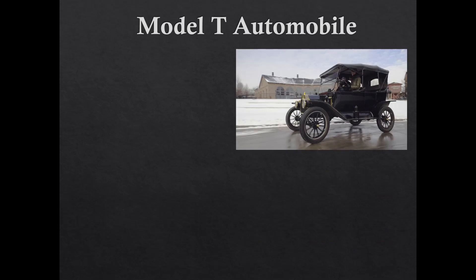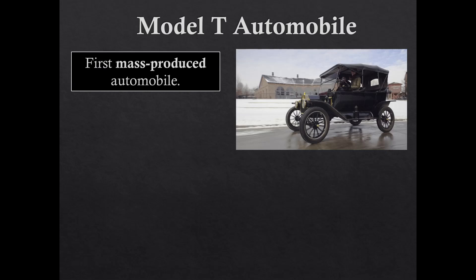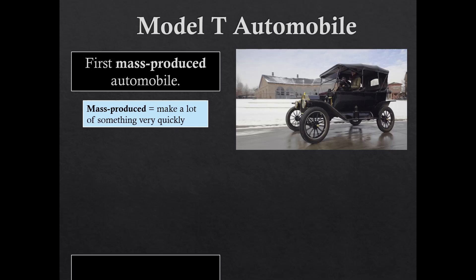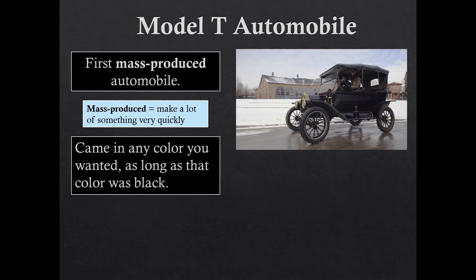We're going to quickly talk about the Model T automobile and the assembly line. This is the Ford Model T - it's a very small car, not very wide, very basic. It's one of our first mass produced automobiles, meaning it's created very quickly. It existed during the 1920s and so many Americans bought this Model T. They advertised it saying it comes in any color you want,